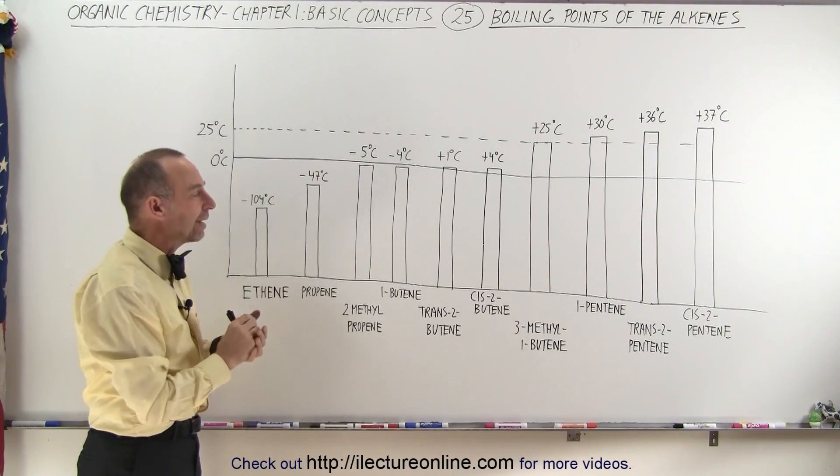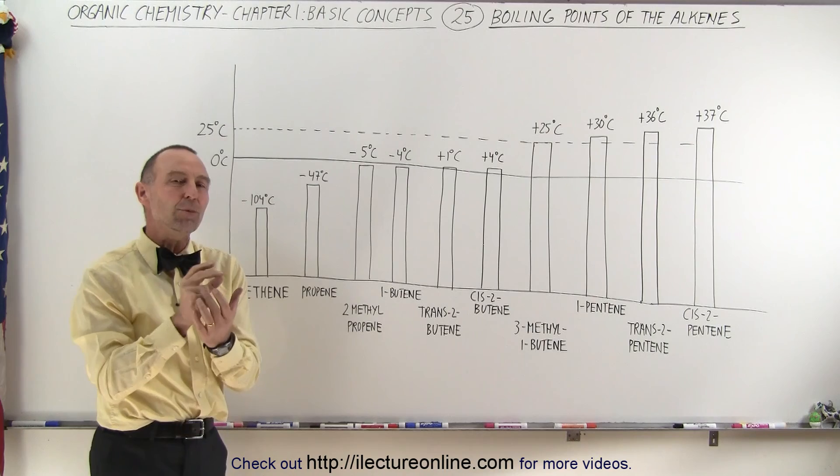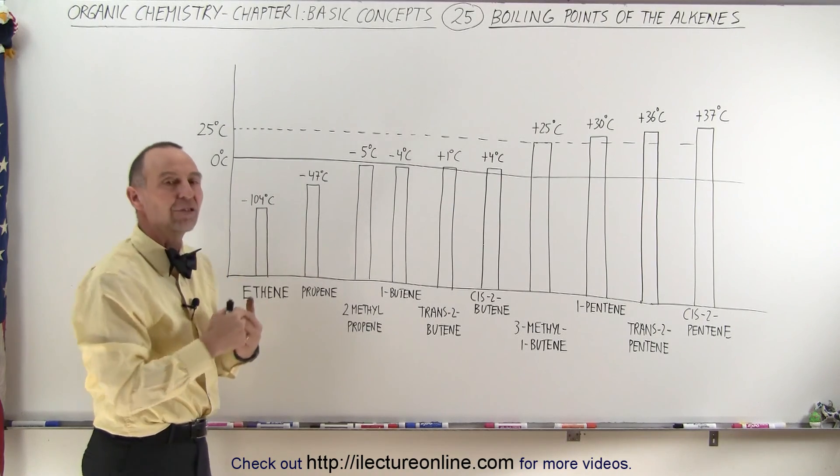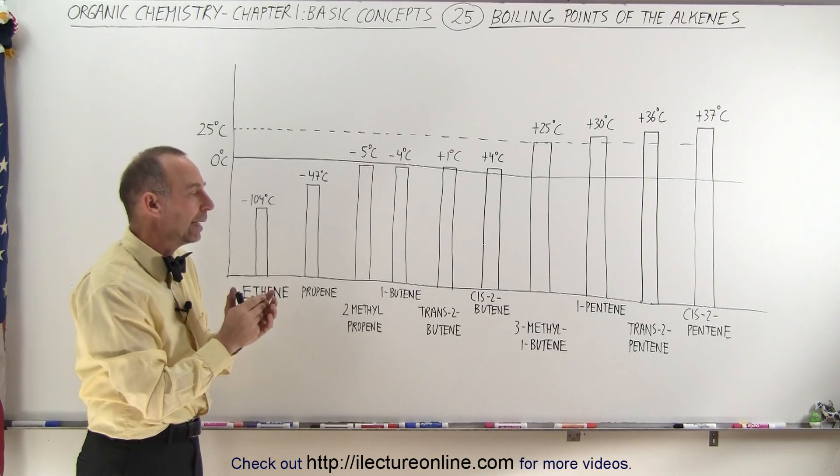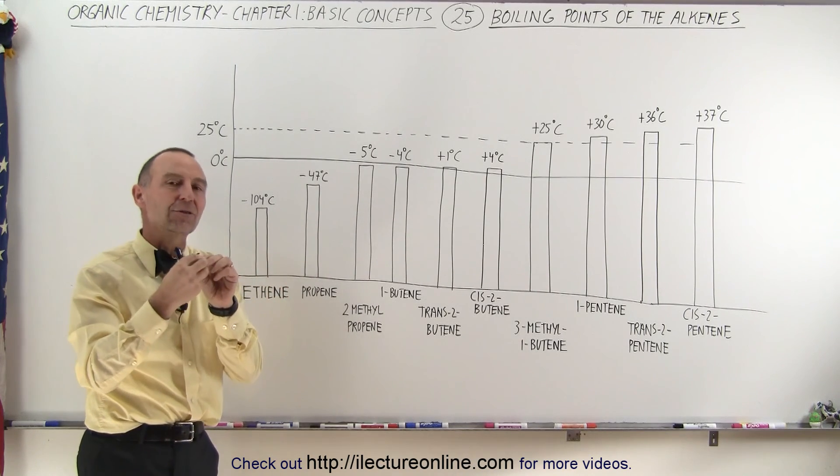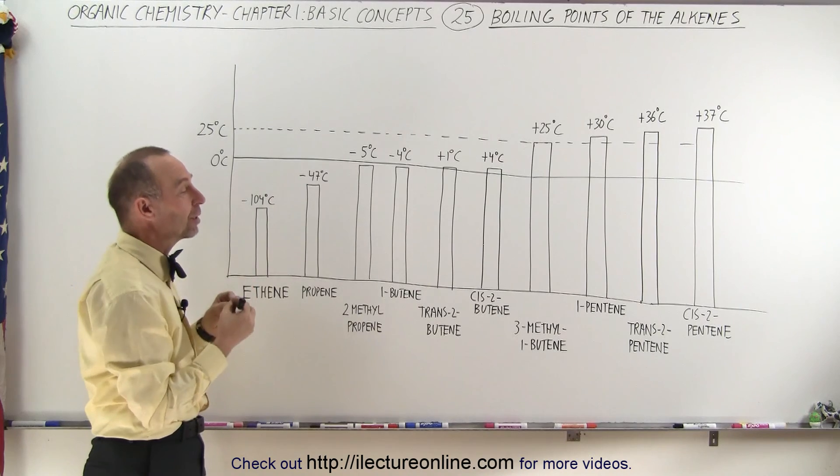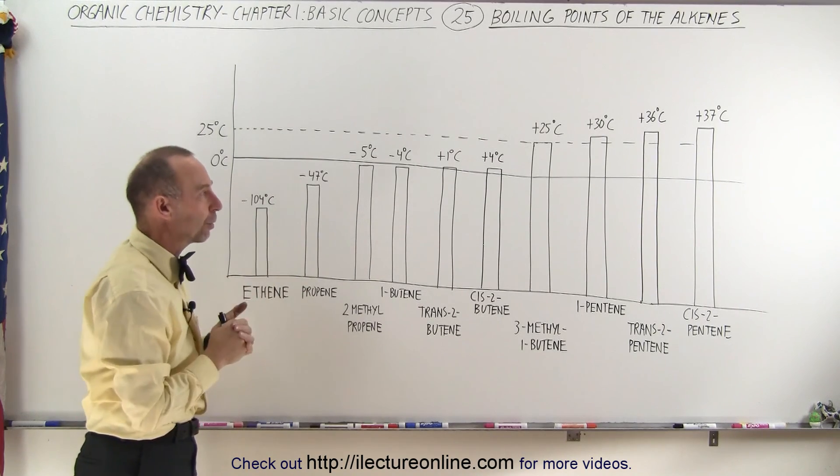The reason for that is that the cis molecule is slightly more polar than the trans molecule, based on the way the hydrogens are distributed around the molecule, and so there would be a slightly higher degree of attraction between the molecules and therefore a slightly higher boiling point.